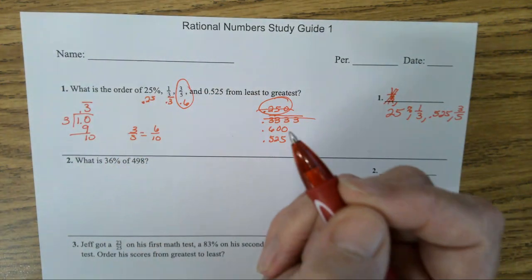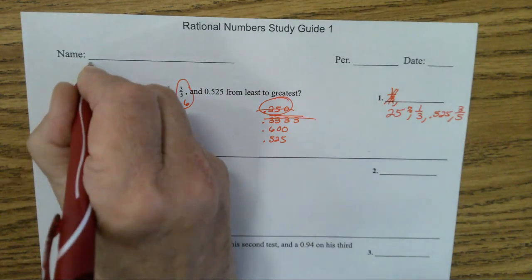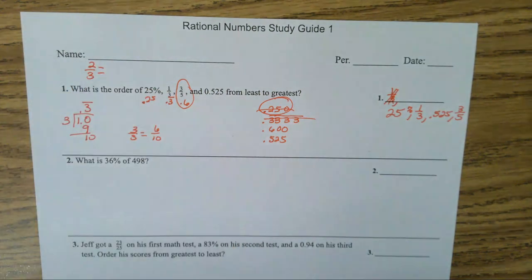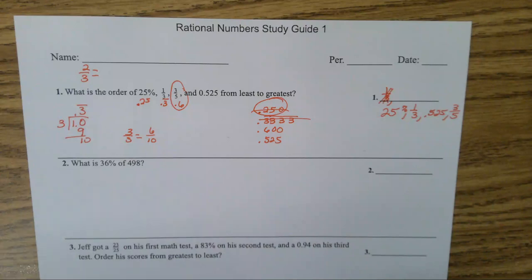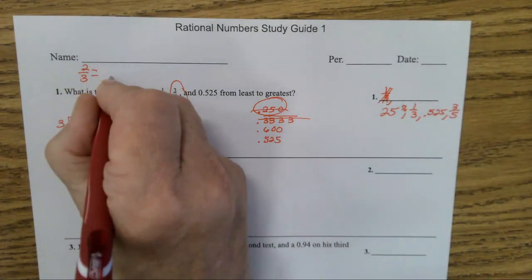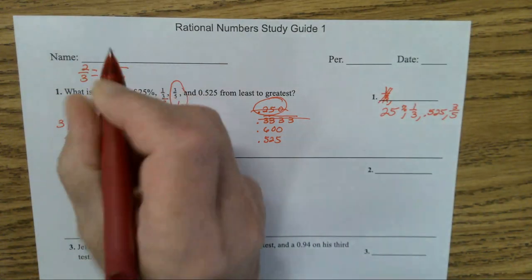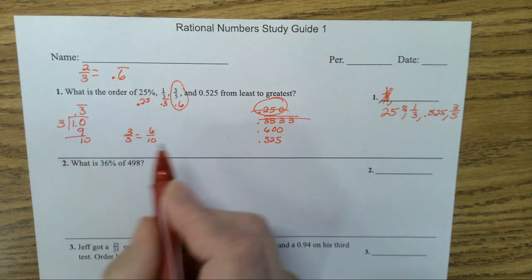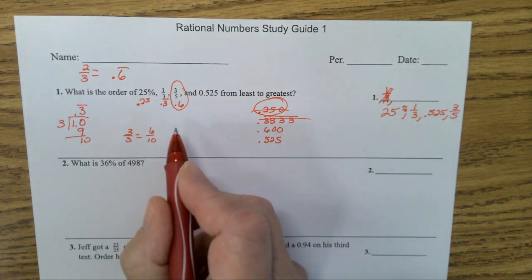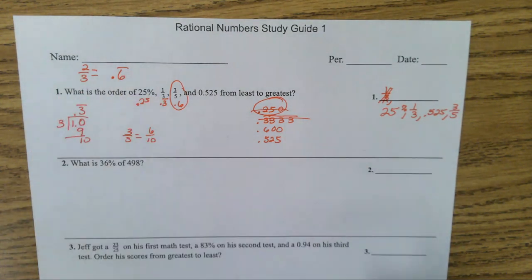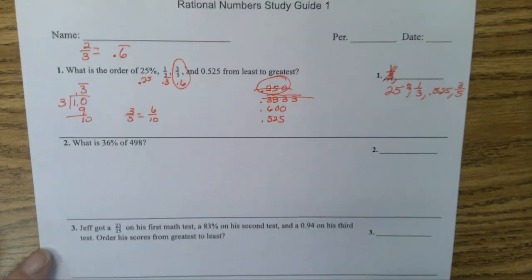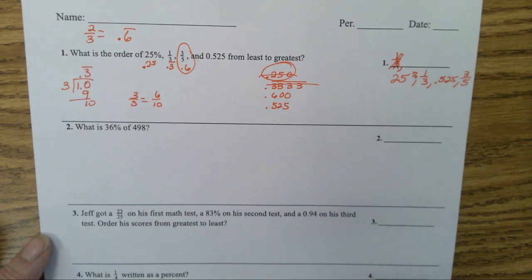That's what you will do on that problem. Now just for future reference, 1/3 is 0.3 repeating. What will 2/3 be? That's right, 2/3 is 0.6 repeating. Just a little future reference.